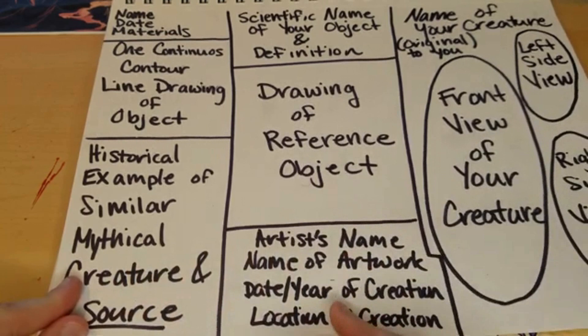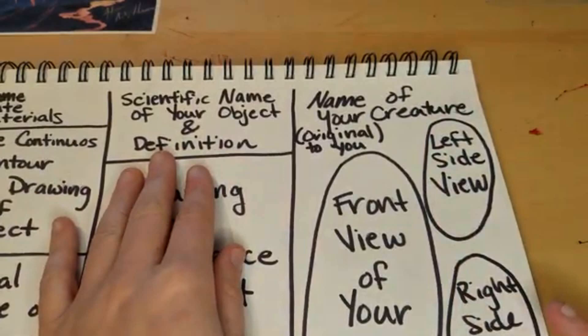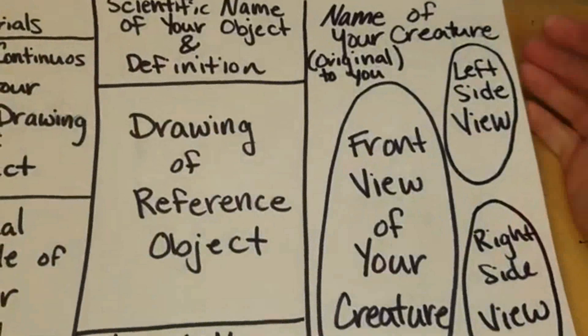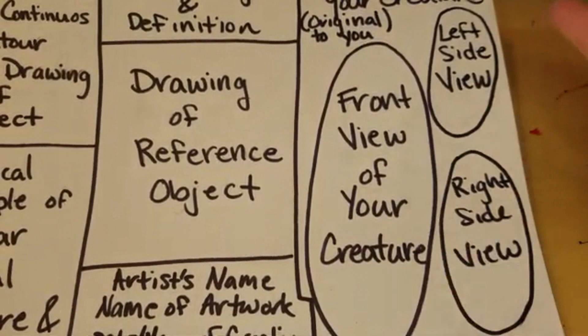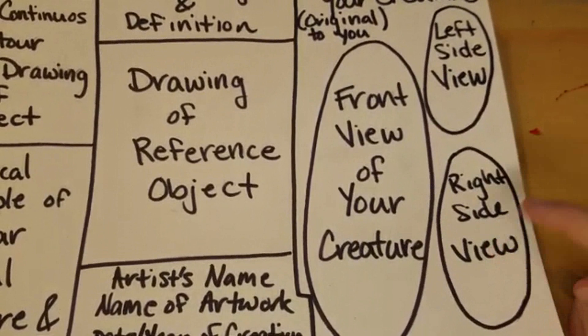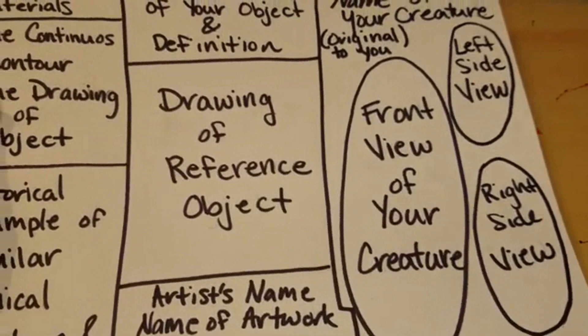Once you find all of the information about your object, we're going to turn it into a mythical creature. You need to have the name of your creature, original to you. You need to have the front view of your creature if it was looking straight at you, the left side view, the right side view — on my example I did the back side view, showing how you would approach them from behind. And that is our template for this week.